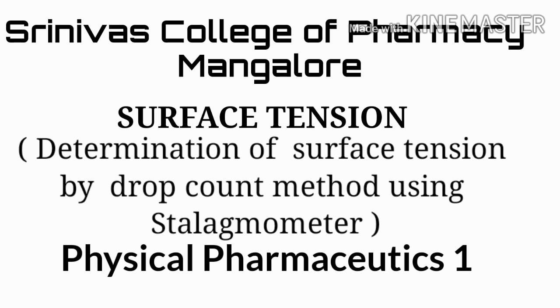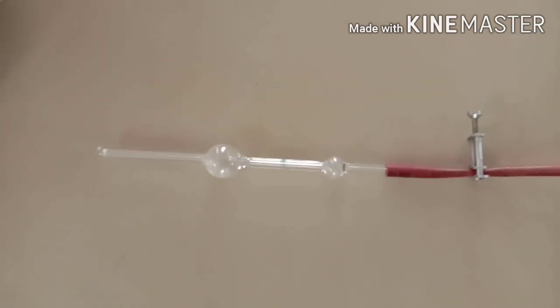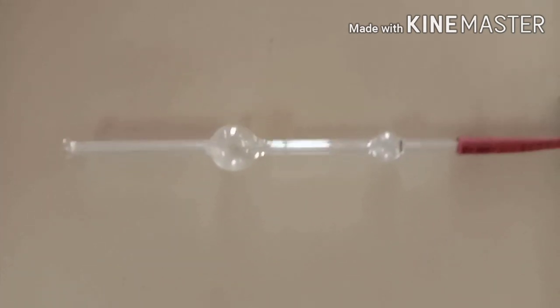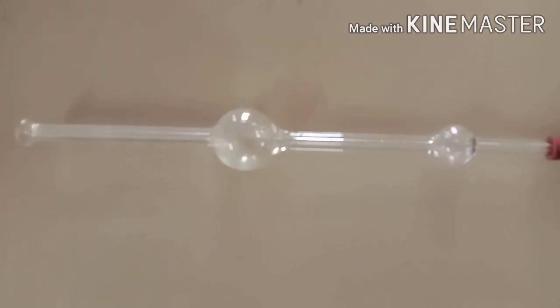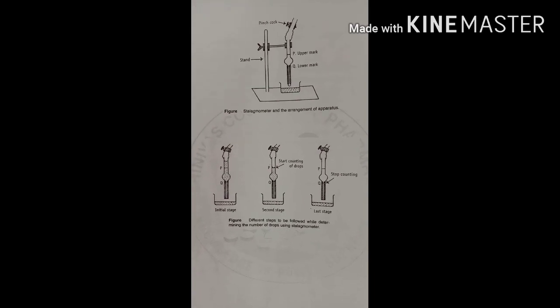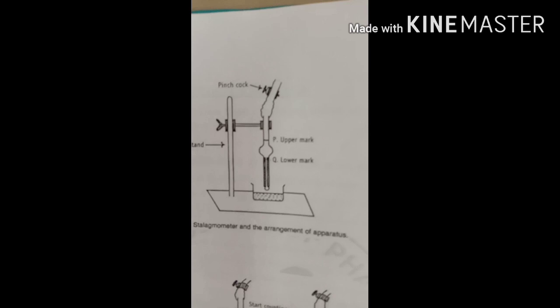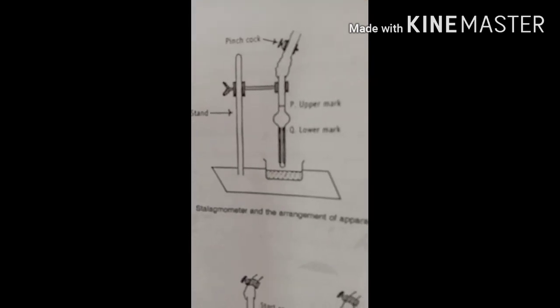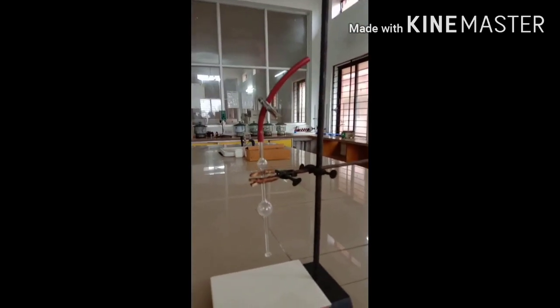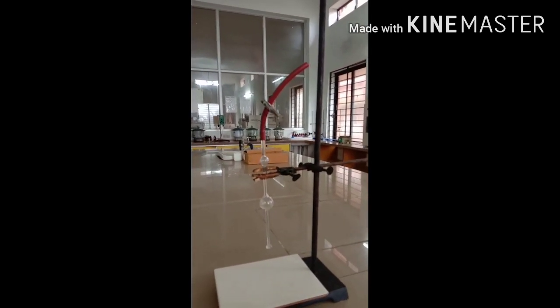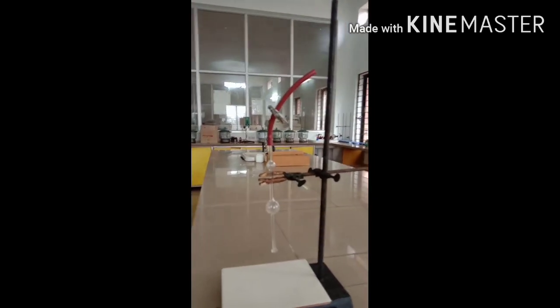This is the stalagmometer. We have to take a clean and dry stalagmometer, attach it vertically to a stand. It has, you can see, upper mark and lower mark. So attach it vertically to a stand and tighten.